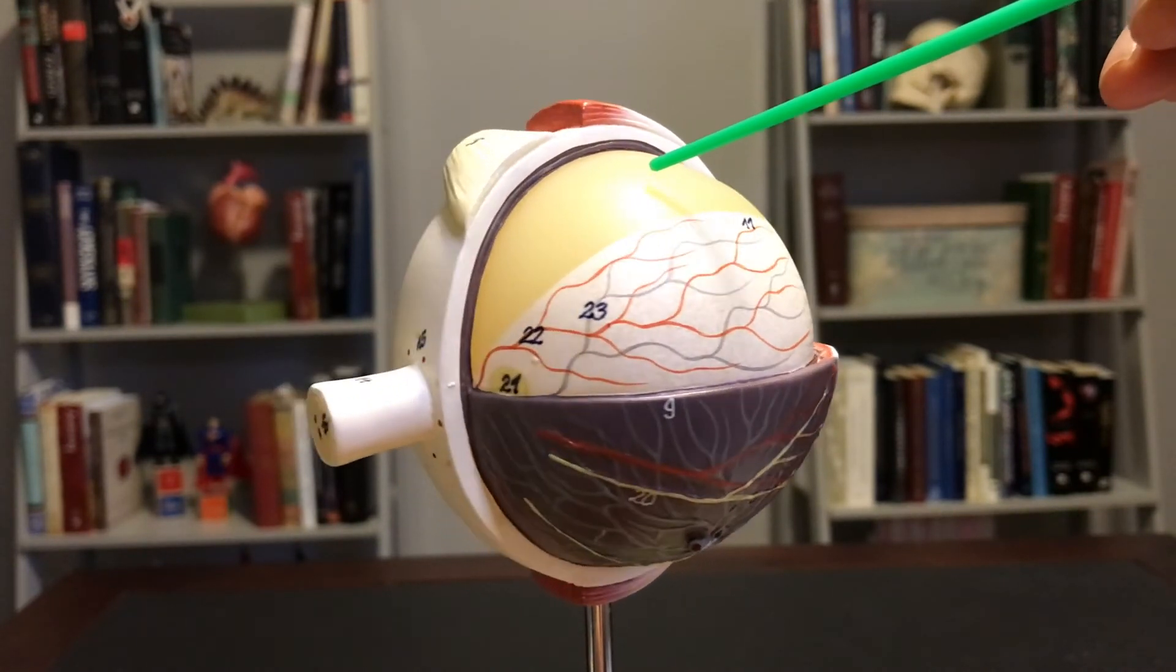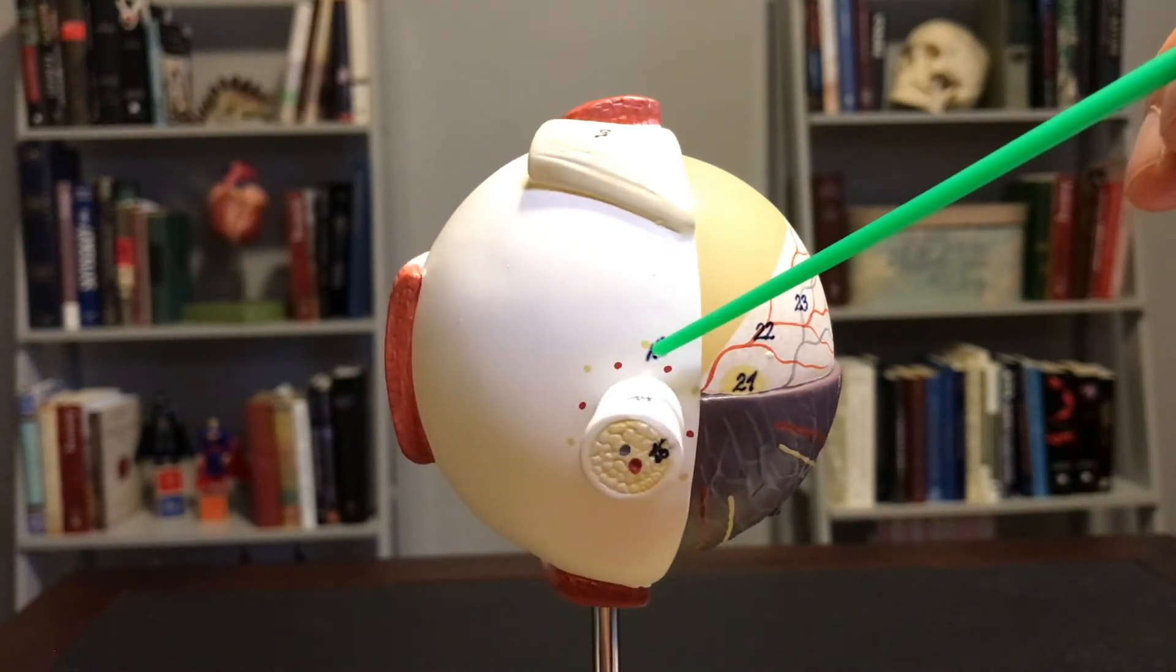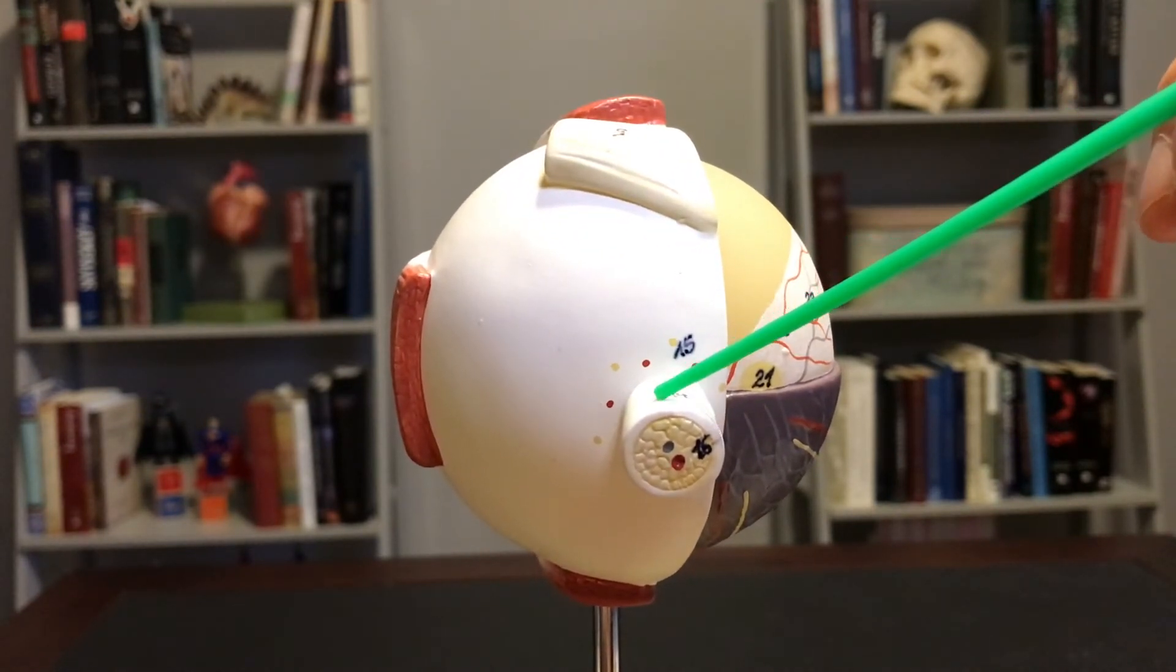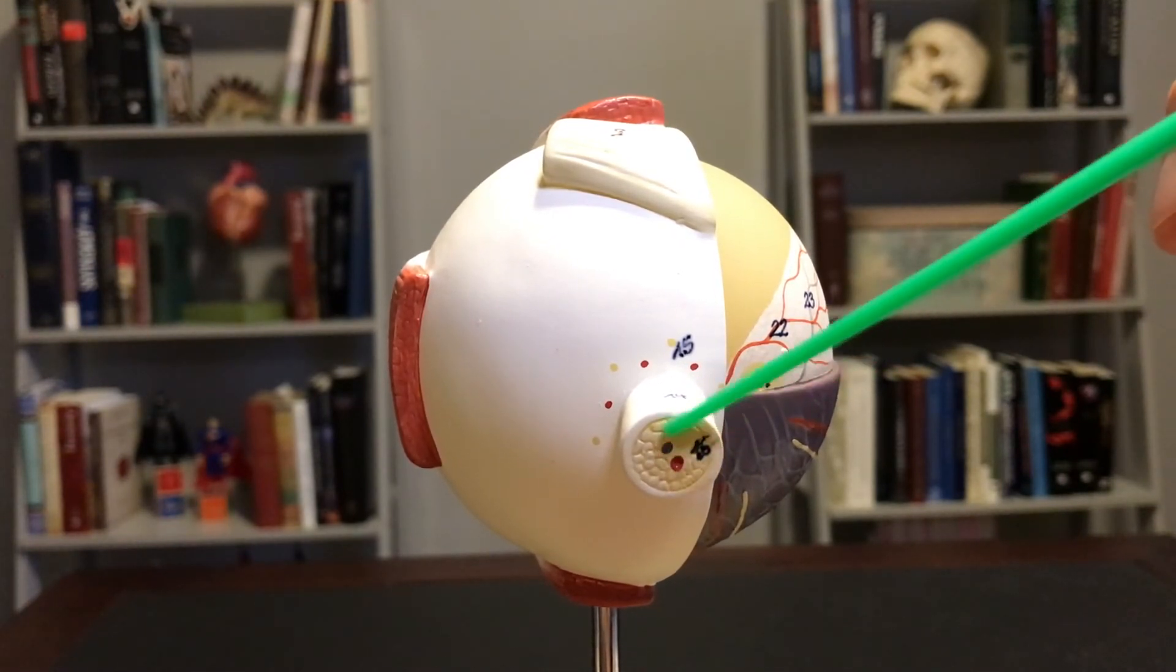If we come all the way back to the posterior side here, a couple things I want to point out. This is the optic nerve, cranial nerve number two, and you can see the retinal blood vessels that run through there.